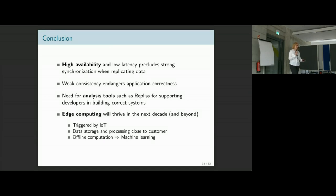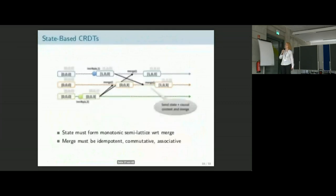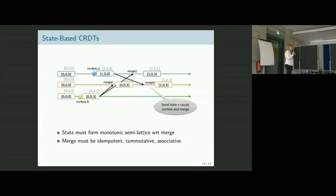Thank you for the keynote — it's very informative. My question is on the state-based CRDT slide. Is it ever possible that the current replica could get a message that contains a state less than its current state? Sure. And then how do you update your current state — do you take the max? You take the max. This is a grow-only counter. So if you take the max of every entry, you're guaranteed to have all updates reflected. If you want a counter that can both grow and go negative, you have two instances of such vectors — one for positive entries and one for negative entries — and that would also work. Thank you very much.